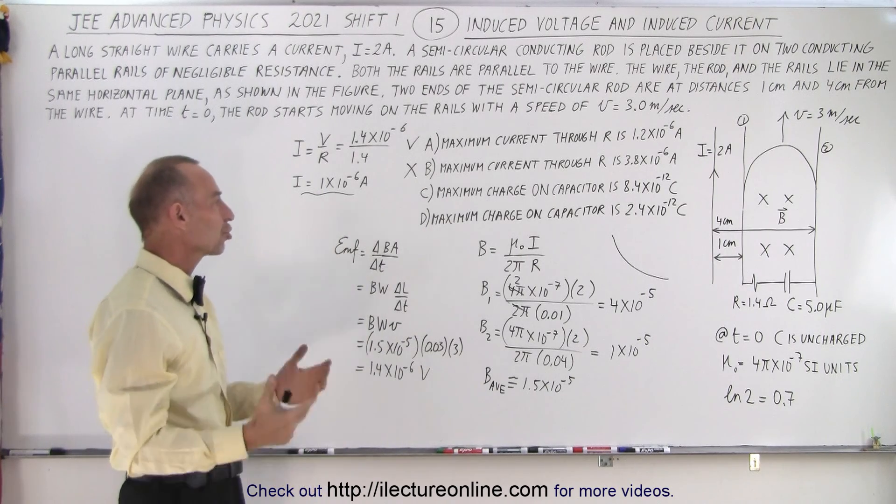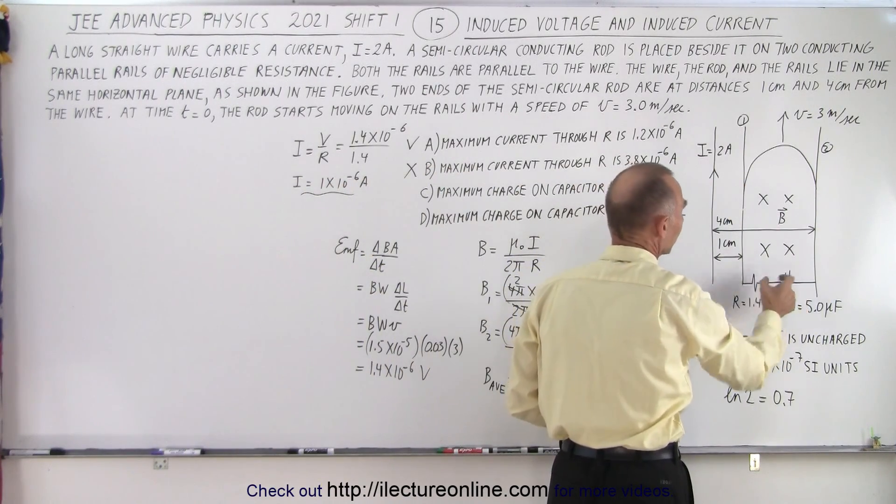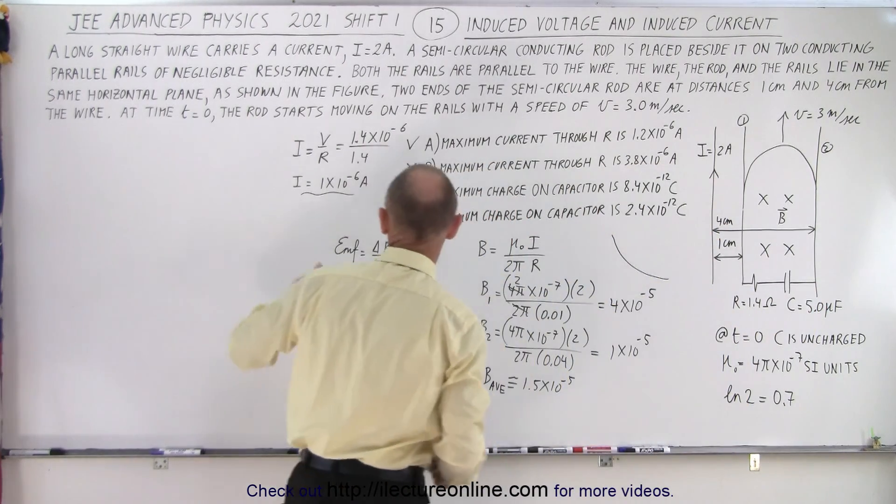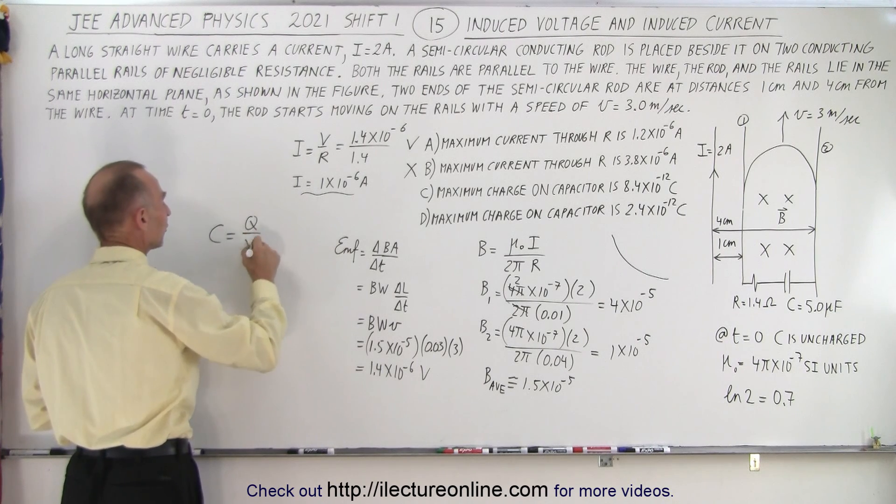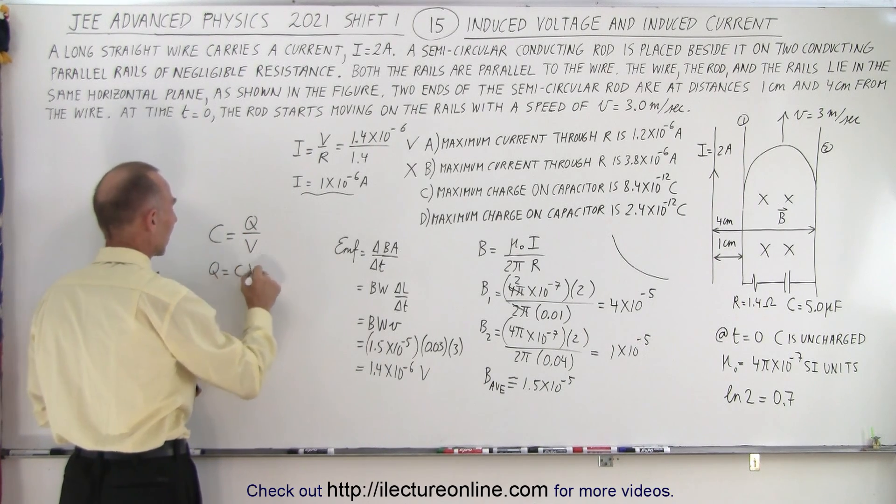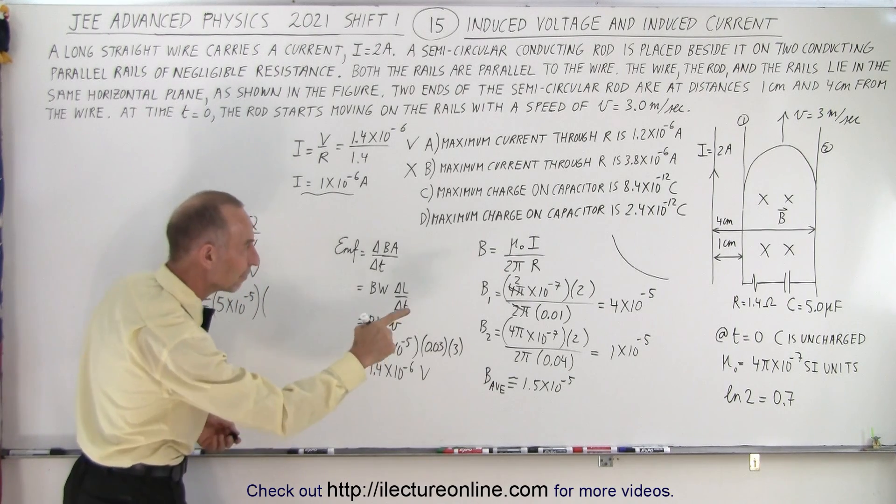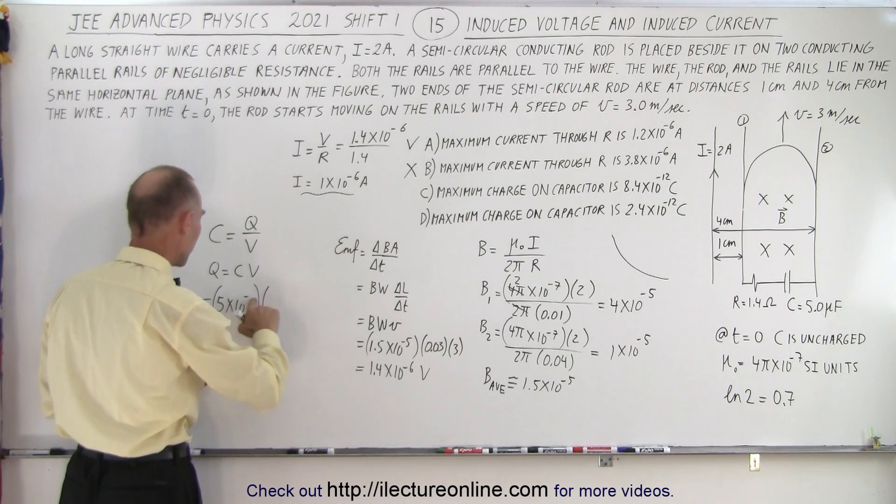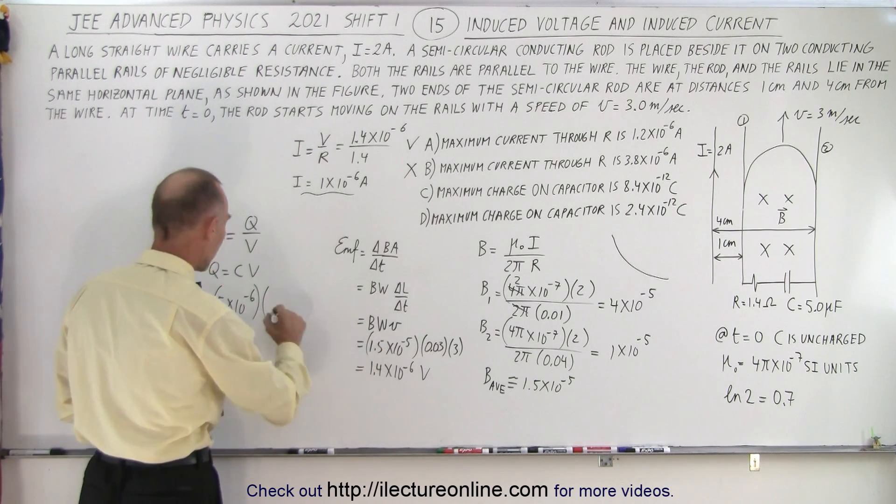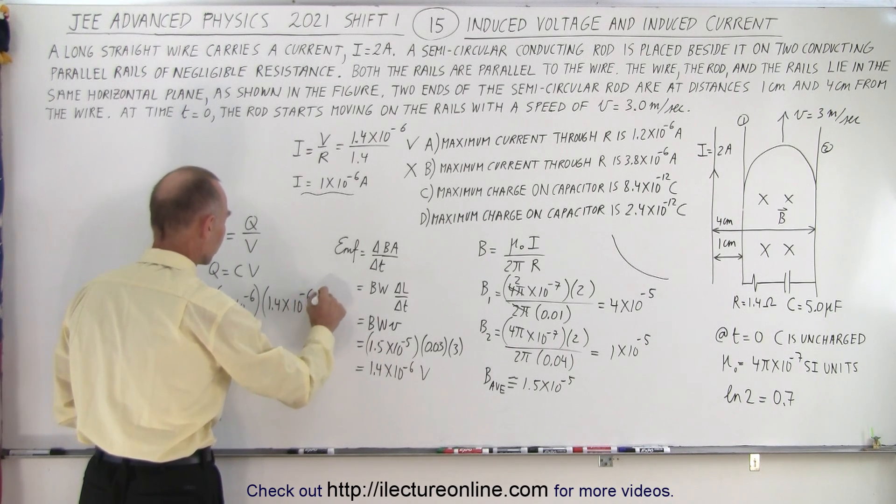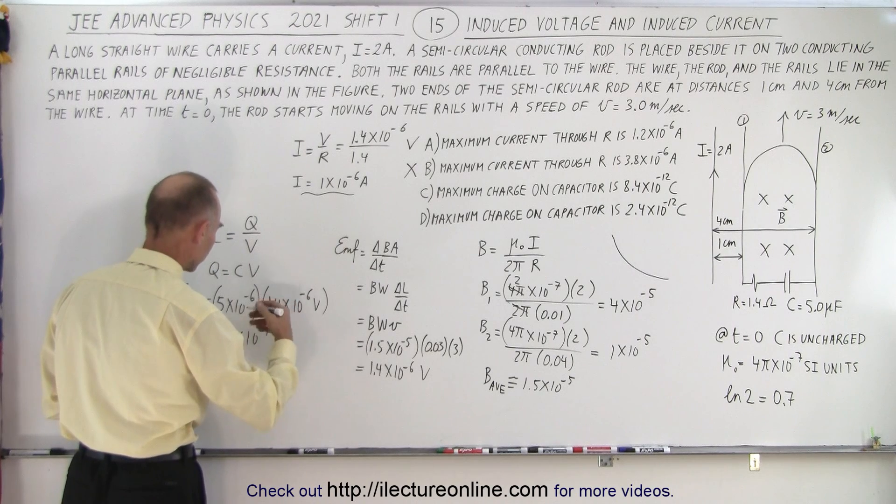The next thing we need to do is calculate the charge on the capacitor. We want to know the maximum charge and the maximum charge is of course when the current stops flowing through there when the capacitor is completely filled up. We know that the emf induced is going to be 1.4 times 10 to the minus 6 volts. So then we can say that the capacitance by definition is equal to the charge divided by the voltage across the capacitor and therefore q is equal to c times v. In this case the capacitance is 5 times 10 to the minus 6 farads. And then the voltage would be equal to about 1.4 times 10 to the minus 6 volts. So when we multiply that we get this is approximately equal to 7 times 10 to the minus 12 coulombs of charge.